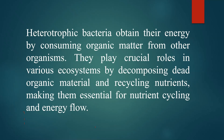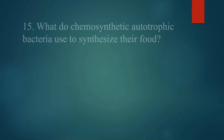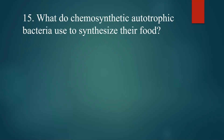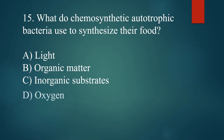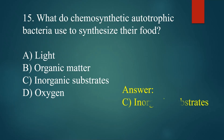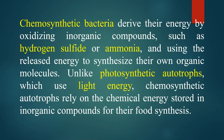What do chemosynthetic autotrophic bacteria use to synthesize their food? A. Light. B. Organic matter. C. Inorganic substrates. D. Oxygen. Answer: C. Inorganic substrates. Chemosynthetic bacteria derive their energy by oxidizing inorganic compounds, such as hydrogen sulfide or ammonia, and using the released energy to synthesize their own organic molecules.